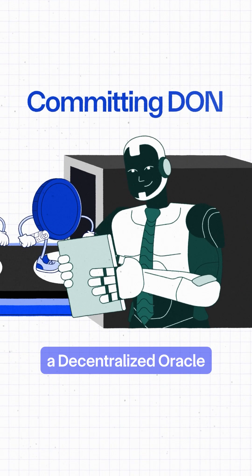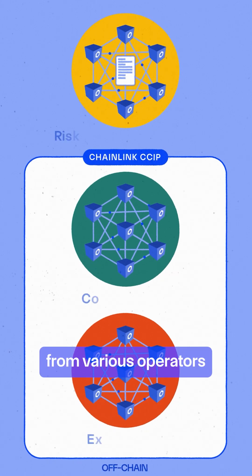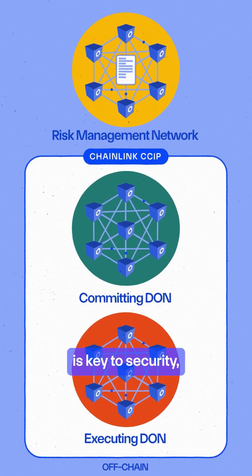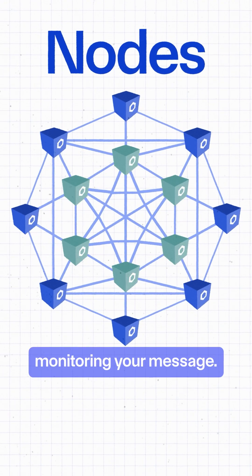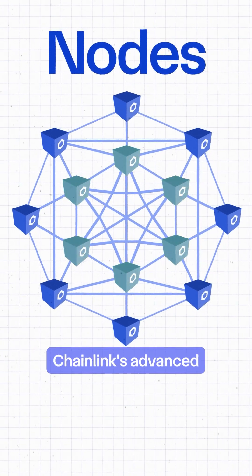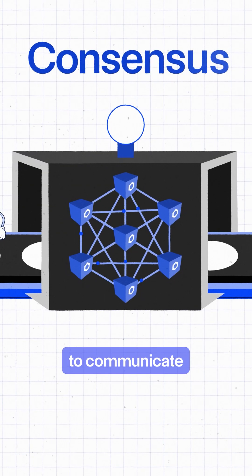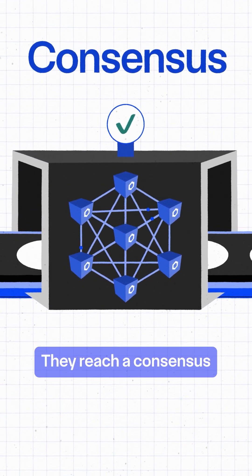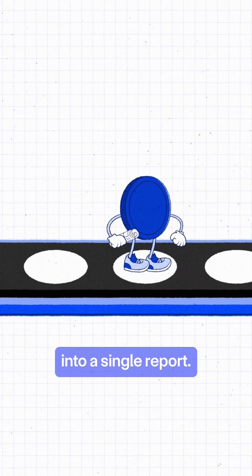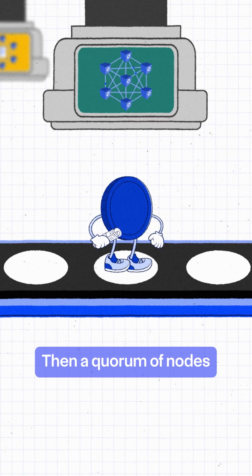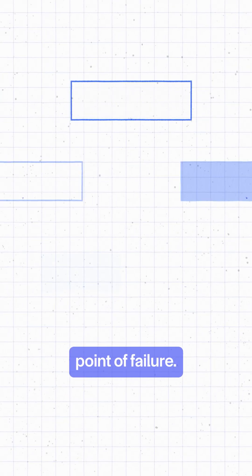Next is the commit process. A decentralized Oracle network, or DON, which is a group of many nodes or computers from various operators located across the globe, is key to security. Because even if one or multiple go down, the others act as backups, monitoring your message. This network uses Chainlink's advanced OCR protocol, which allows multiple nodes to communicate through a secure peer-to-peer network. They reach a consensus on message data, and a leader node aggregates all observations into a single report. Then a quorum of nodes must sign off on that report. This consensus mechanism ensures there's no single point of failure.